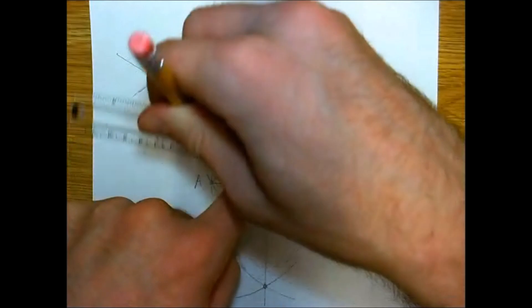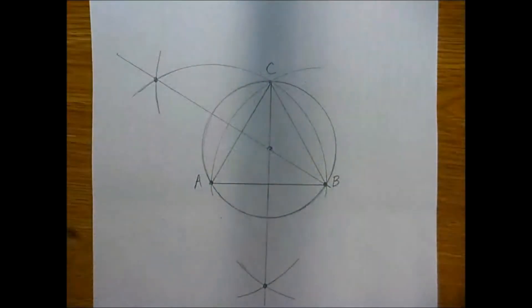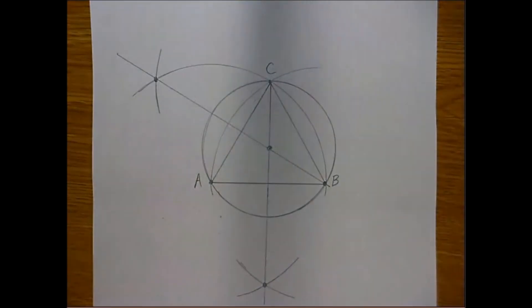Here we finally have to change the length of the compass from the circumcenter to any one of the points and we construct the circle. If we do this correctly, the circle should hit all three points, as we can see clearly here.